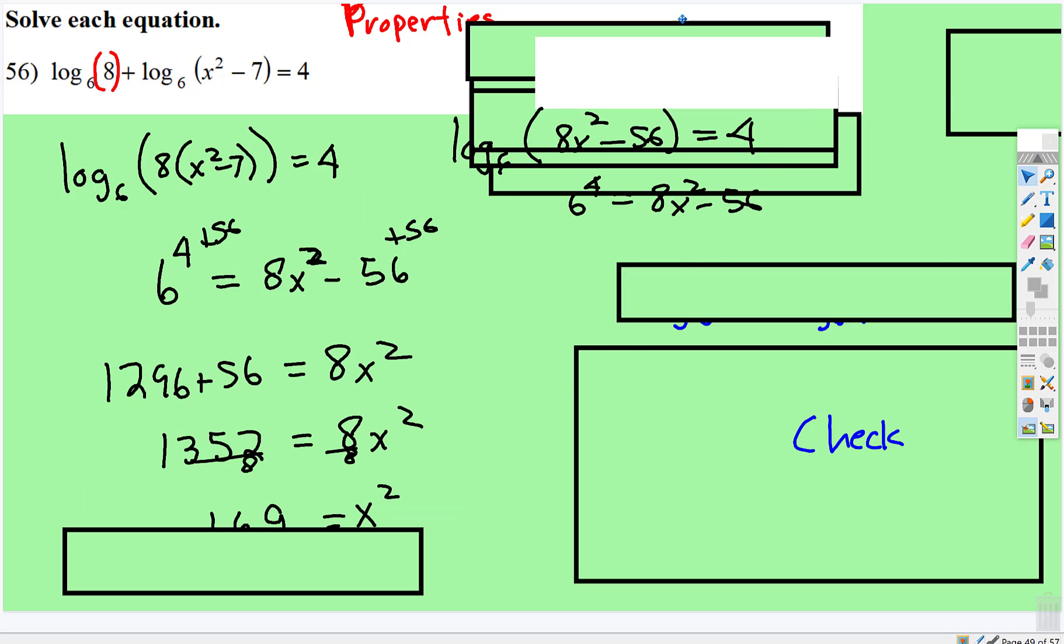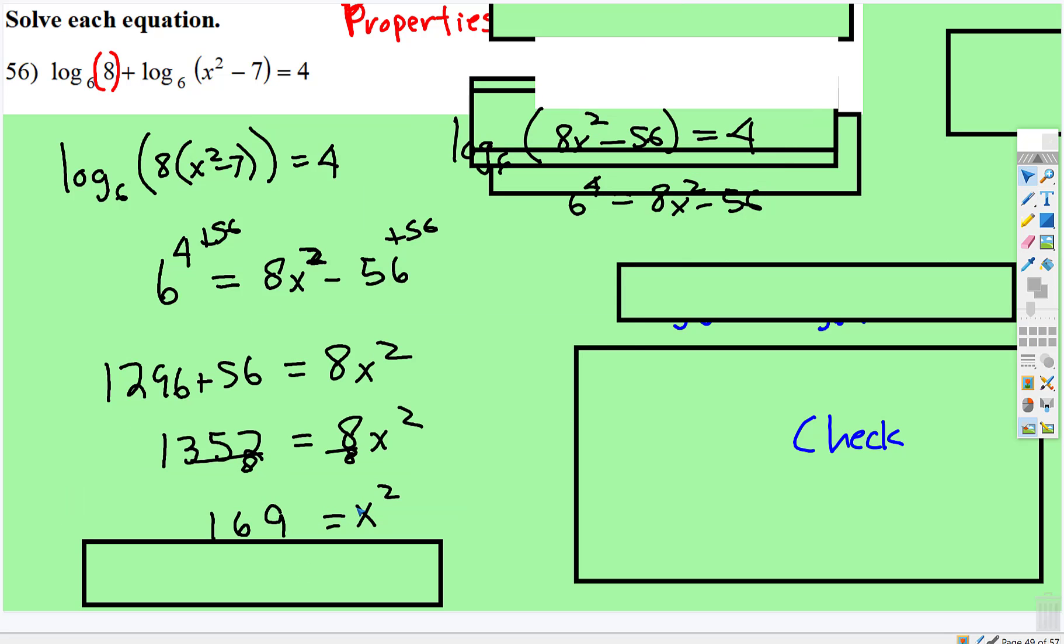x squared equals 169. Remember when you take the square root of a quadratic, there's a positive and negative version. So x equals positive and negative 13.